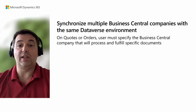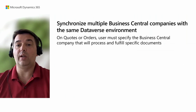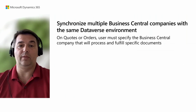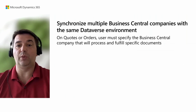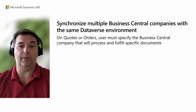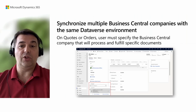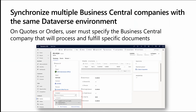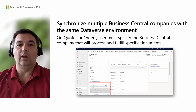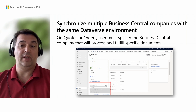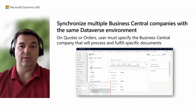Documents such as sales quotes or orders require users to pick the target Business Central environment and company that will process a specific document. Company filters are now stricter, meaning sales quotes and orders without an explicit company defined will no longer show up in the list of sales quotes and orders that you can synchronize with a particular Business Central company.